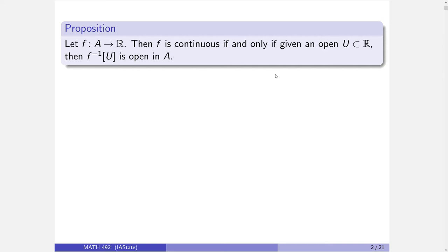When we first encounter continuity in calculus, it's kind of just like a day — continuous functions are nice. We had the intermediate value theorem, the extreme value theorem, theorems that we're going to come up with really nice topological proofs of later on. We noted limits are nice, essentially. Continuity has a much broader definition involving epsilons and deltas. And while the epsilon-delta definition is really nice for continuity, it's very specific to real numbers — I need to talk about absolute values and differences, things that are very real-number specific.